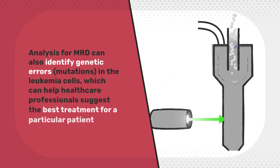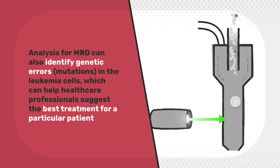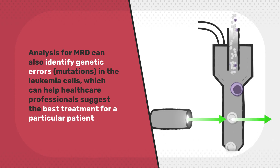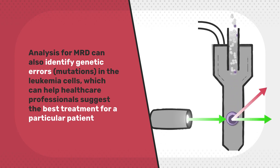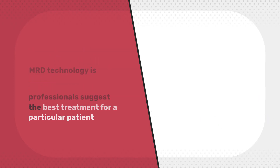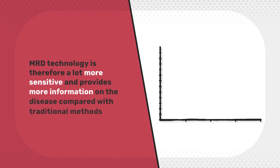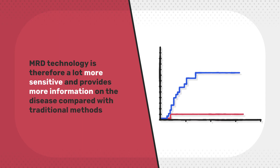Analysis for MRD can also identify genetic errors in the leukemia cells, which can help healthcare professionals suggest the best treatment for a particular patient. MRD technology is therefore a lot more sensitive and provides more information on the disease compared with traditional methods.